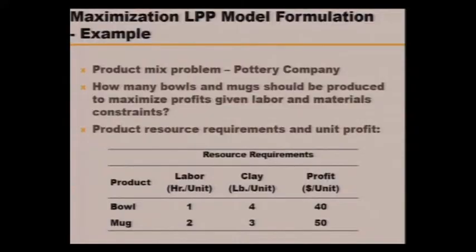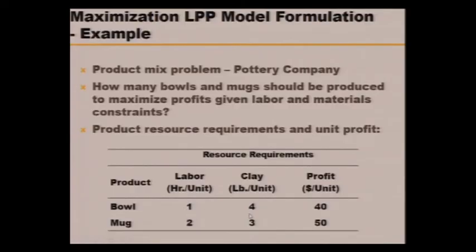First, a maximization LPP model formulation example — a product mix problem for a pottery company. The problem is: how many balls and mugs should be produced to maximize the profit, subject to given labor and material constraints? Each unit of balls requires 1 hour of labor and 4 pounds of clay, with a profit of $40 per unit. Each unit of mugs requires 2 hours of labor and 3 pounds of clay, with a profit of $50 per unit.